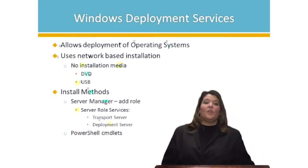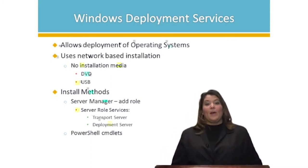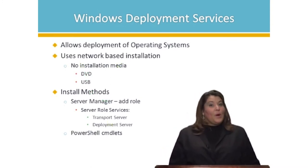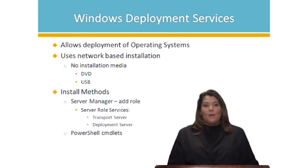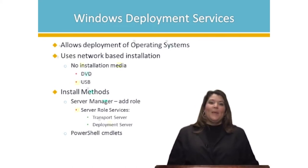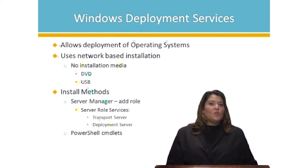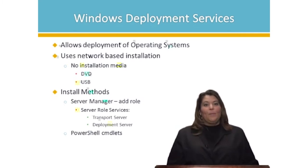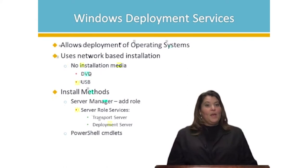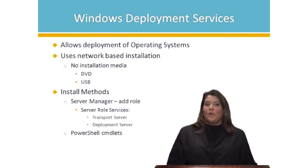To install WDS, go to Server Manager and simply add roles. You'll see Windows Deployment Services, and it will automatically pick up the two role services: Transport and Deployment. You can install Transport independently if needed for a different application, but if you're looking for Deployment Services, you need both. If you want to install it via PowerShell, you can certainly do that — there are plenty of PowerShell cmdlets to help you out.